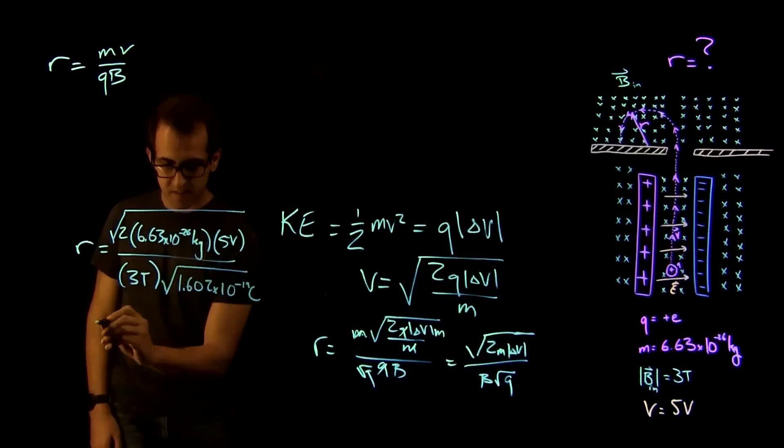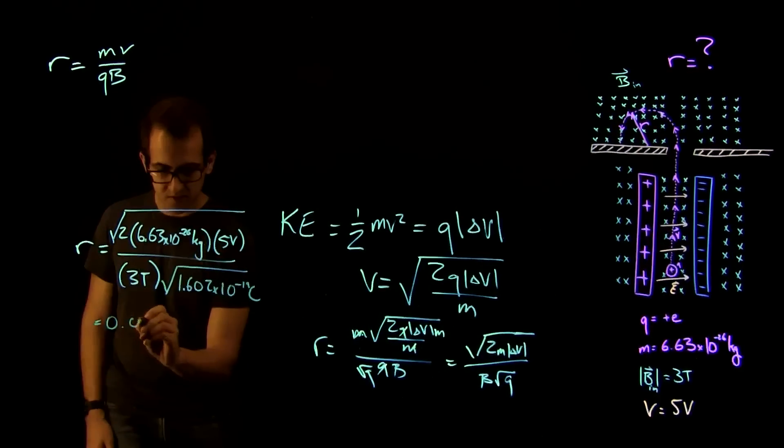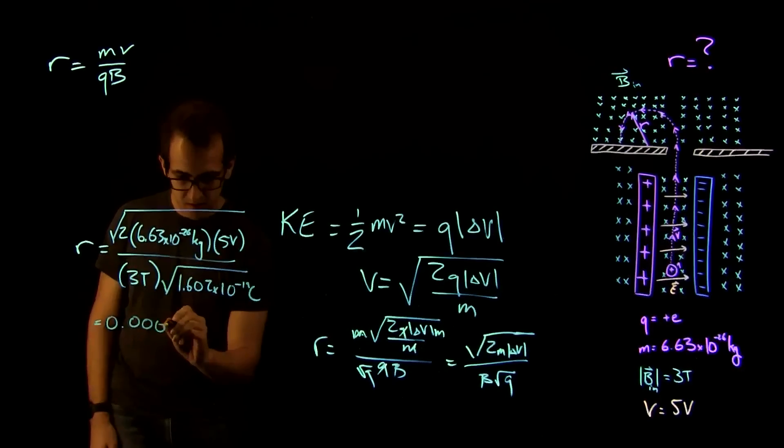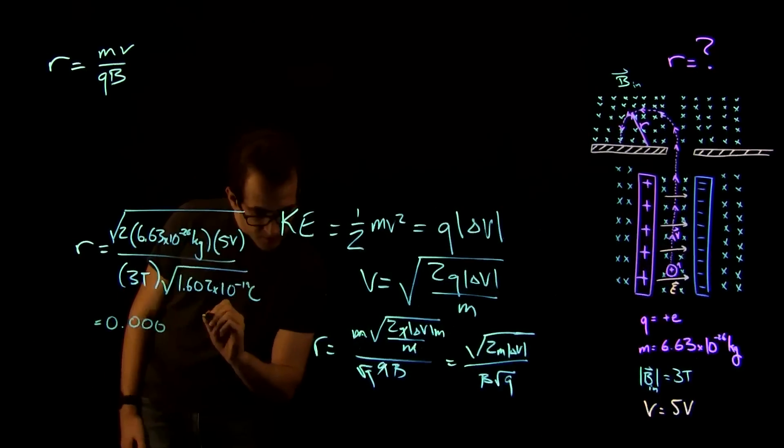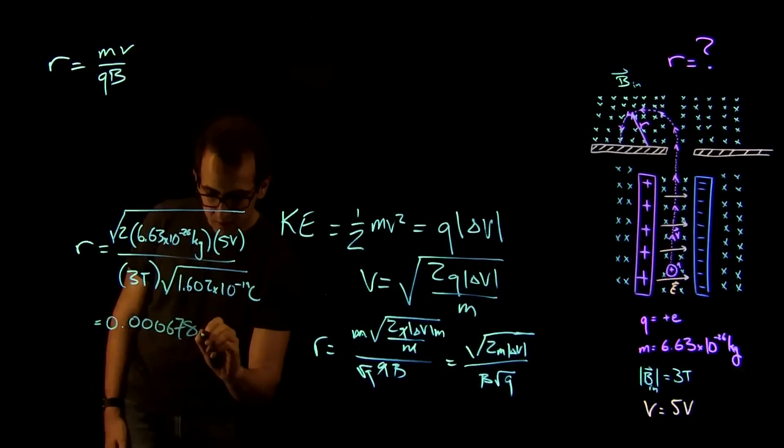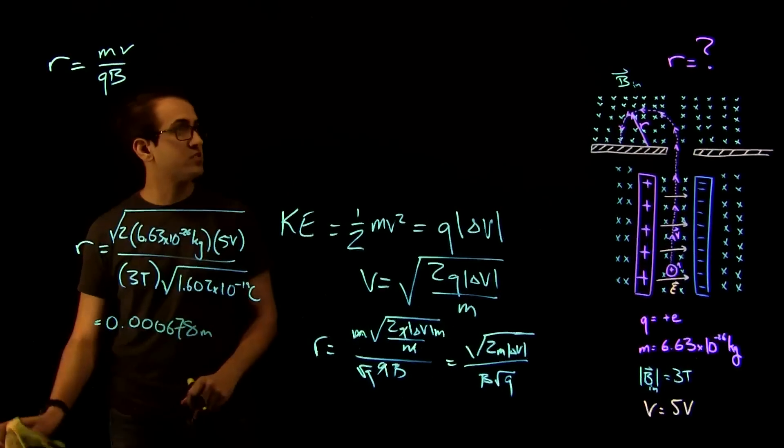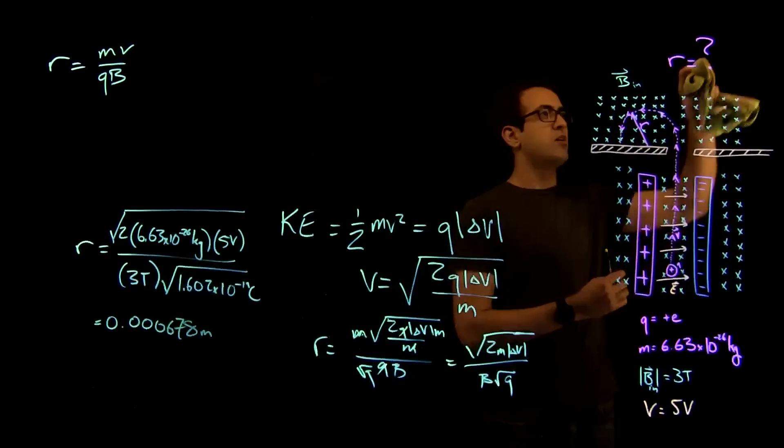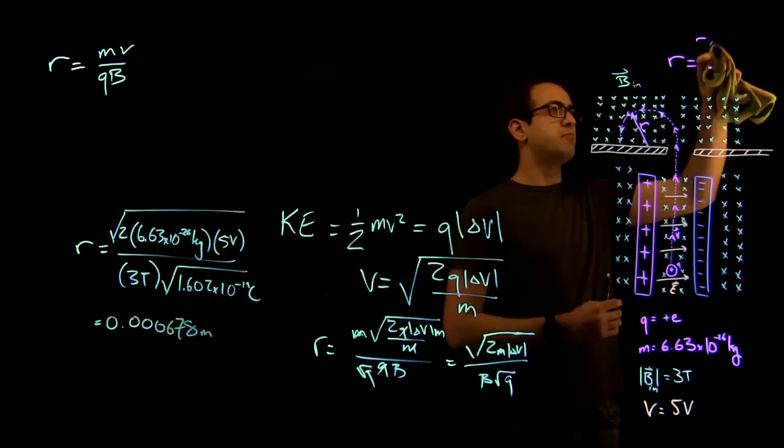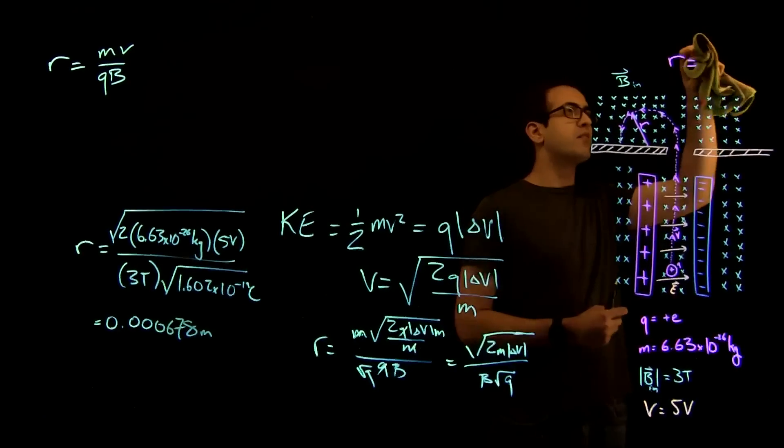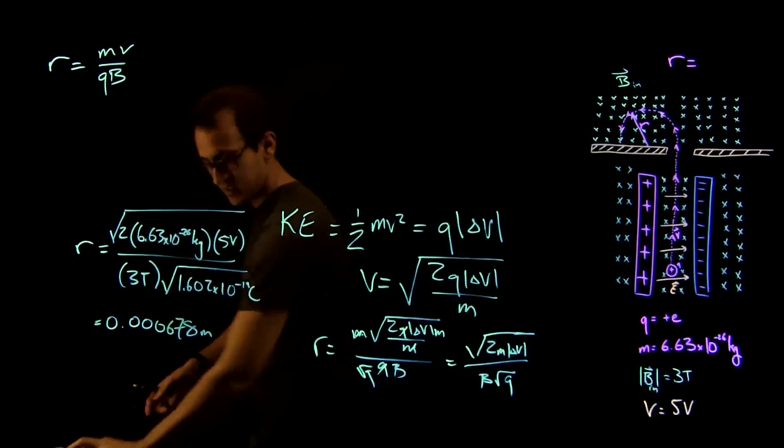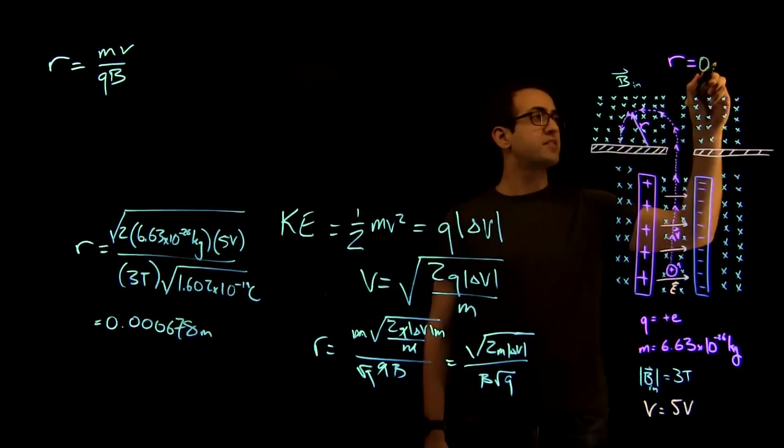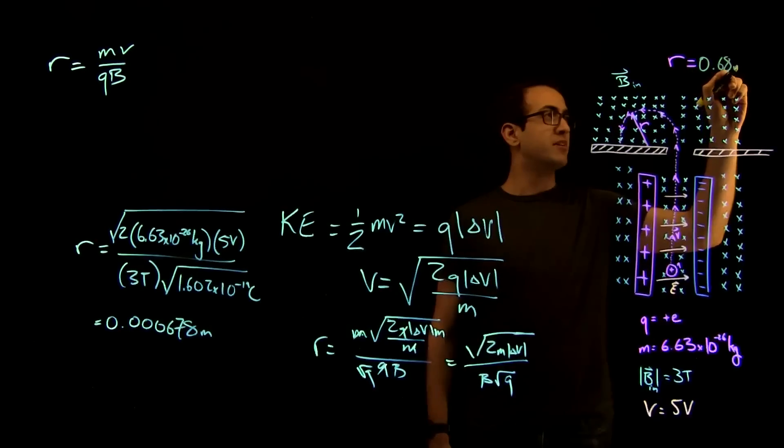And we find that this is equal to 0.000678 meters, which means we can go over here and replace this question mark with R. R being equal to, when accounting for the number of zeros here, 0.68 millimeters.